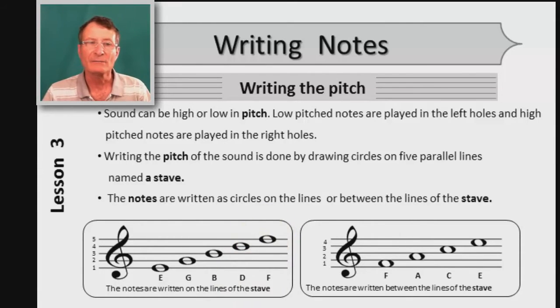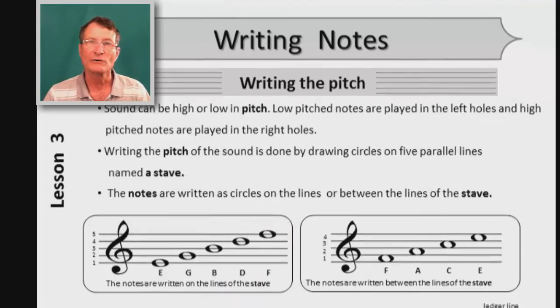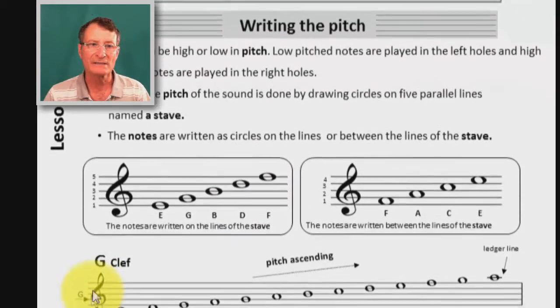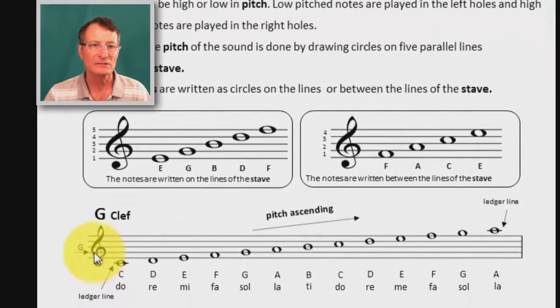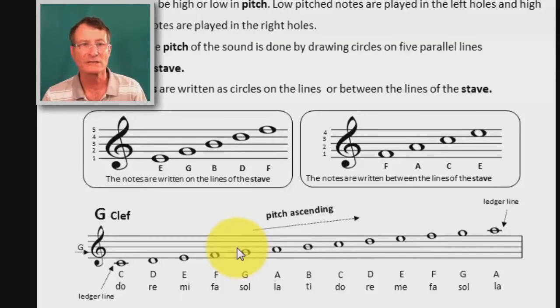Now at any beginning of a stave we draw a sign, a symbol which circles around the second line of the stave like a tail of a snake and it's called G clef. G clef shows us the note G which are on the second line of the stave, and if we know that this is a G by the clef so we know how to play all the other sounds.